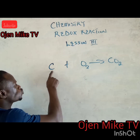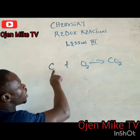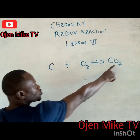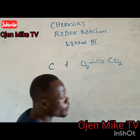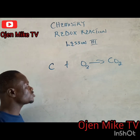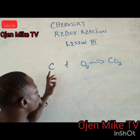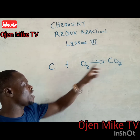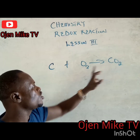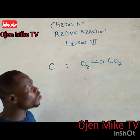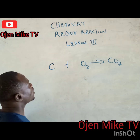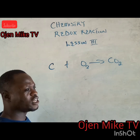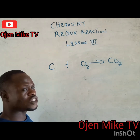We have carbon reacting with oxygen to give us carbon dioxide. We are going to determine the oxidation number of carbon on the reactant side and carbon on the product side, so that we will know whether it is reduction or whether it is oxidation.